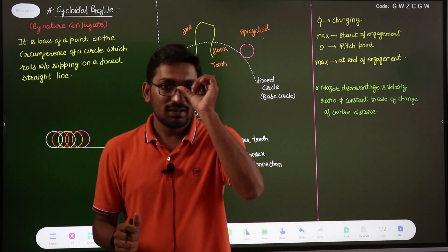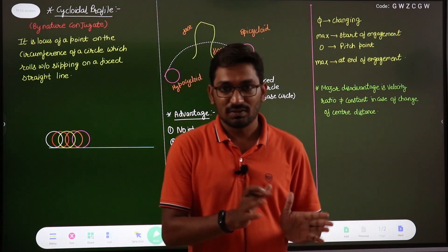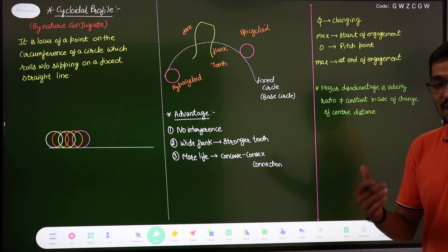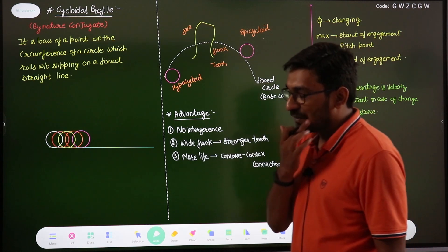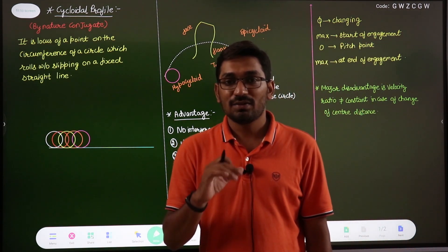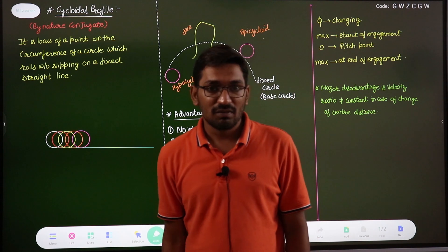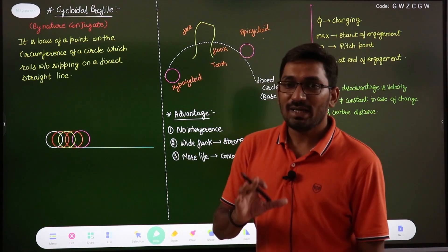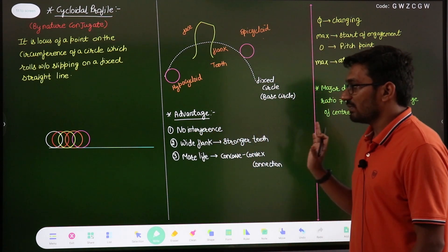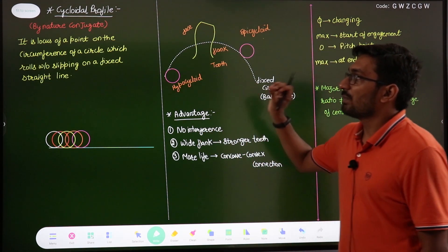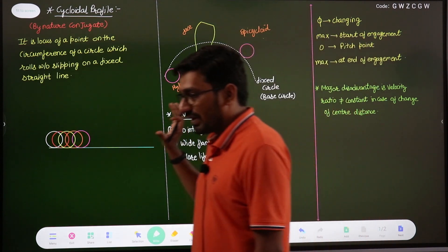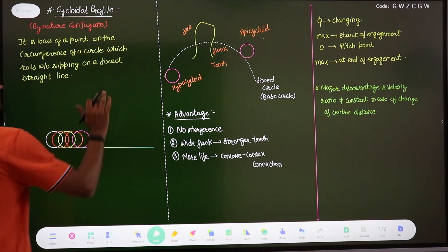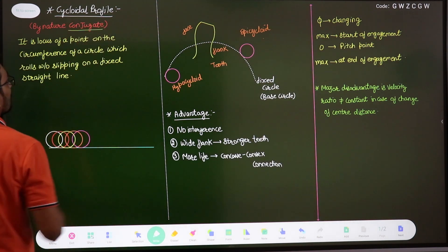We already discussed the involute profile and its analysis. Profiles which follow the law of gearing are known as conjugate profiles, and conjugate profiles are of two types: the involute profile and the cycloidal profile. The cycloidal profile is also a conjugate profile, meaning it will also satisfy the law of gearing.